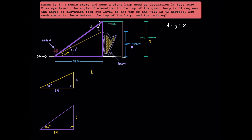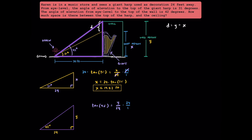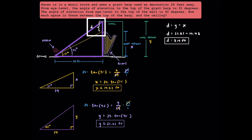Let's find x and y now, and then solve for d. For the yellow triangle, we can start by saying tangent of 31 degrees is going to be equal to x over 24. Multiplying both sides by 24, these 24s will cross-cancel, and we can say that x is equal to 24 times tangent of 31 degrees. The height of the harp is about 14.42 feet tall. To find the height of the wall, tangent of 42 degrees is equal to y over 24. Multiplying both sides by 24, y is equal to 24 times tangent of 42 degrees, which is approximately 21.61 feet. The empty space between the top of the harp and the ceiling is going to be equal to 21.61 minus 14.42, which is how much space is between the top of the harp and the top of the wall.